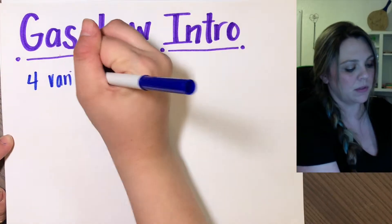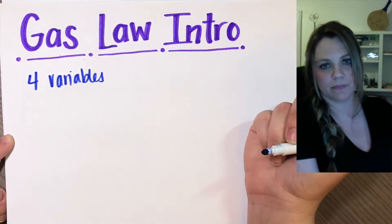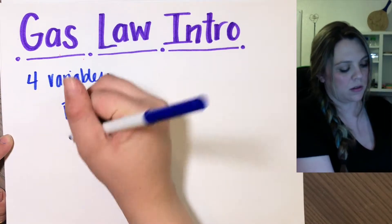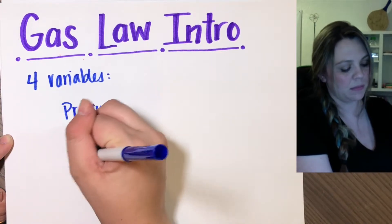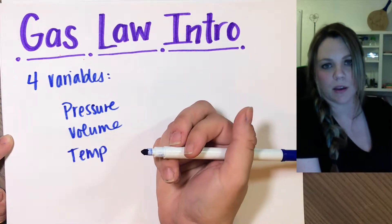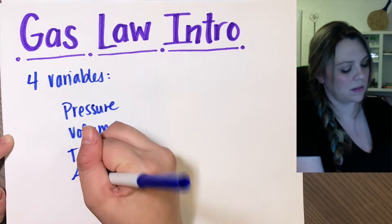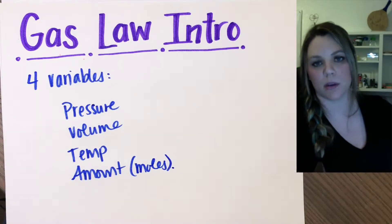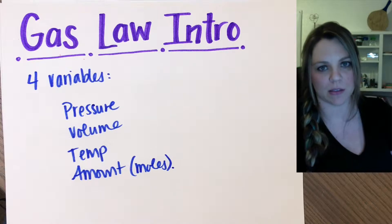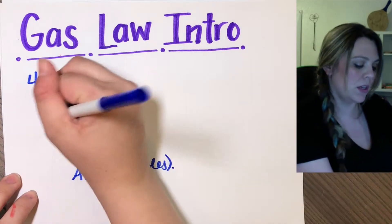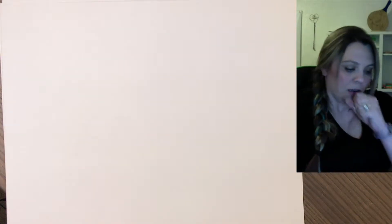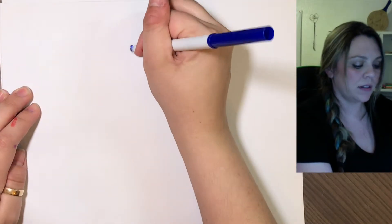When you deal with gas laws there are four main variables: pressure, volume, temperature, and the amount — I always call it 'the amount' because I think that makes more sense. The amount of gas is basically the moles of gas, just how much gas you have. These are the four you need to pay attention to.